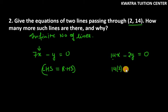So 14 into 2 is 28. How much is 14? 28 minus 14 equals 14, which is equal to 0 on your right side. So that's why we can say that we can have infinite number of lines passing through (2, 14).